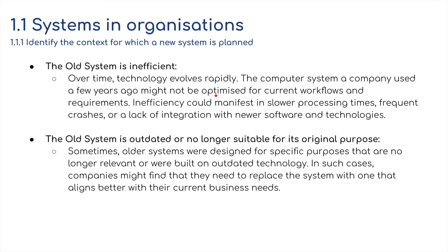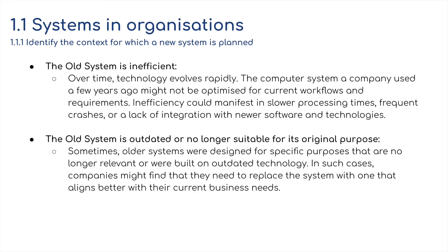Why would a company consider getting a new computer system? Well, the old system is inefficient. Over time, technology evolves rapidly. Those people who maybe have a game system at home went out to the PS5 — it wasn't long ago since people were using the PS3, PS2, and even the PS1. The computer system that a company might have used a few years ago is not necessarily optimized for current workflows and requirements. Inefficiency could manifest in slower processing times, frequent crashes, or a lack of integration with newer software and technologies. You might buy a new printer and realize none of the computers support the drivers for it.